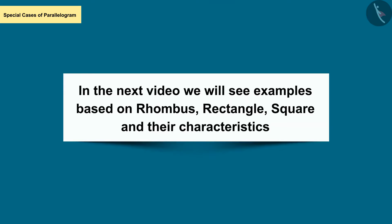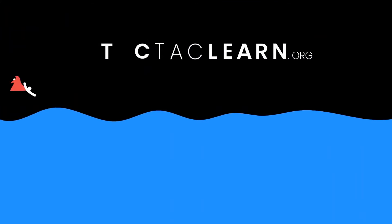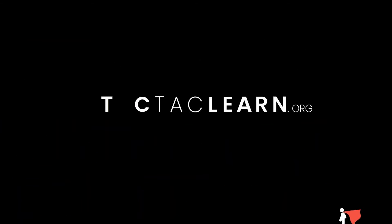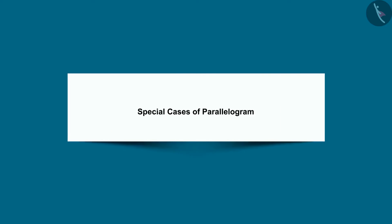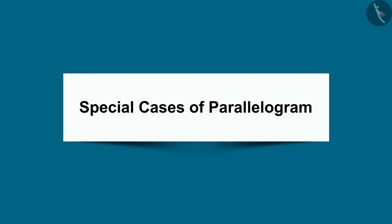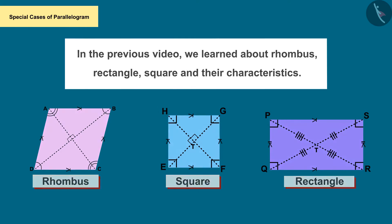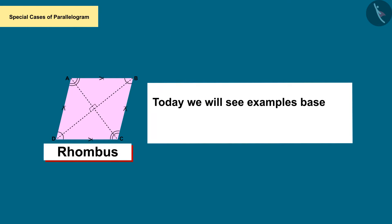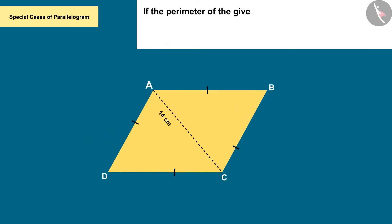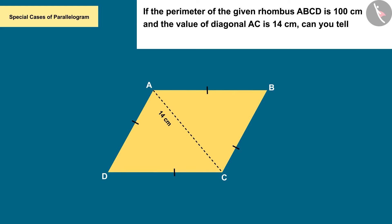In the previous video we learned about rhombus, rectangles and squares and their characteristics. Today we will see examples based on rhombus. If the perimeter of rhombus ABCD is 100 cm and the value of diagonal AC is 14 cm, find the value of diagonal BD.